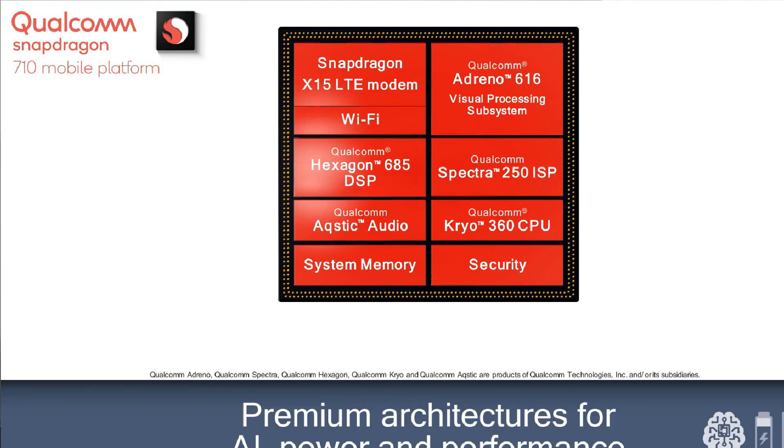Snapdragon has its own named architecture — it has changed from the standard ARM design through its own research and development. They use custom Kryo cores, like Kryo 360, modifying the ARM architecture. This makes Snapdragon a little bit more efficient. So Snapdragon is as powerful and as power-efficient as possible.